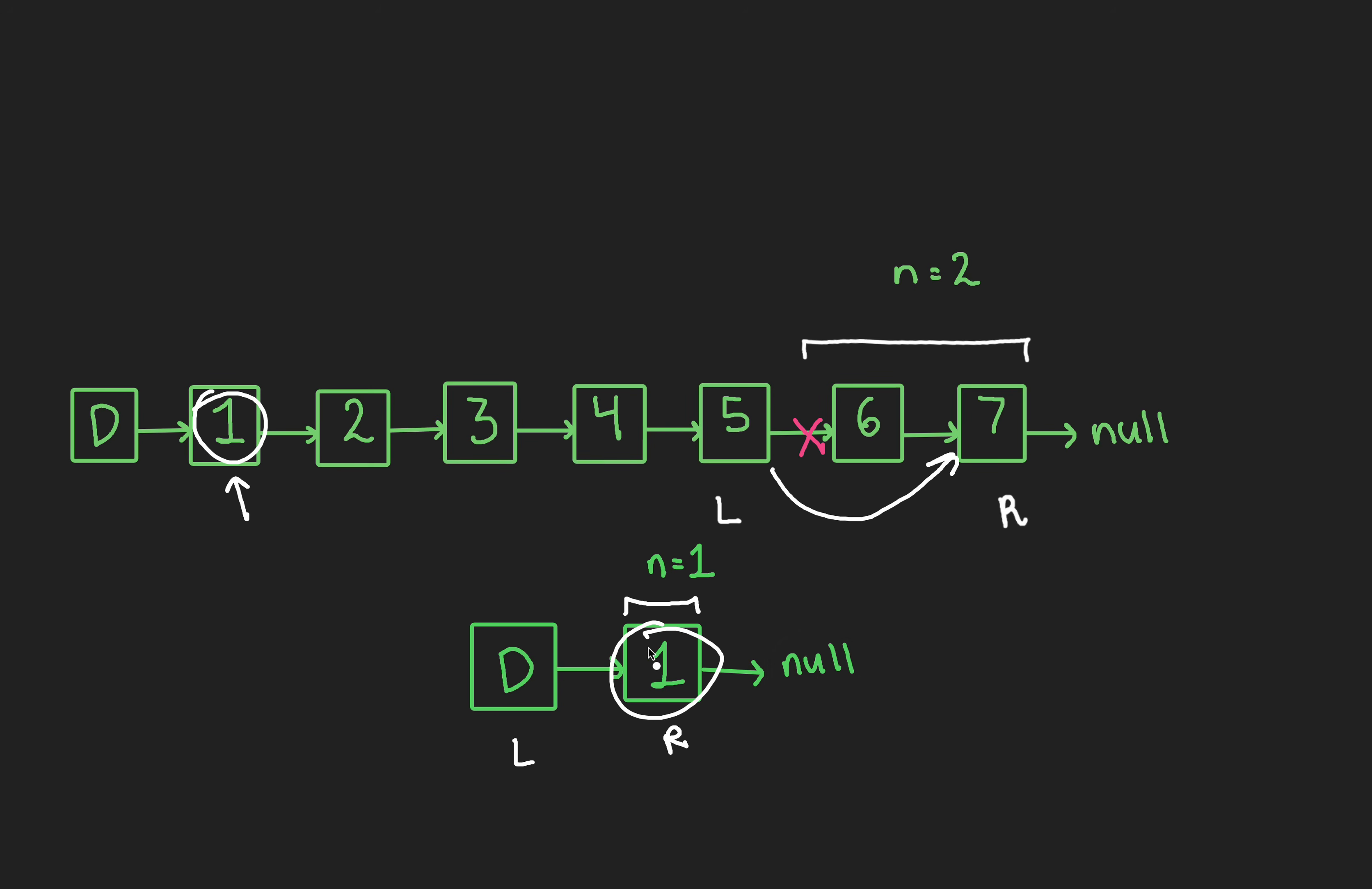I'm a broken record at this point. We remove node 1 by doing left next equal to left next next. Doing so removes the reference to node 1. Lastly, we return the node after the dummy, which is the null pointer that's our answer. That makes sense, since we deleted the only node in our input linked list.